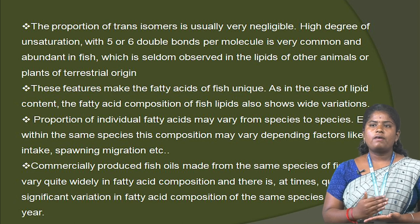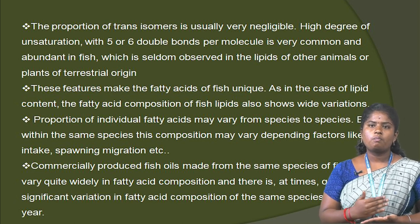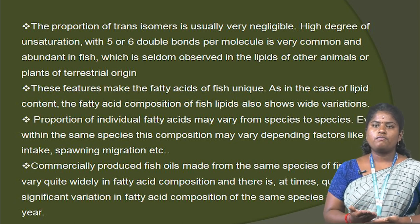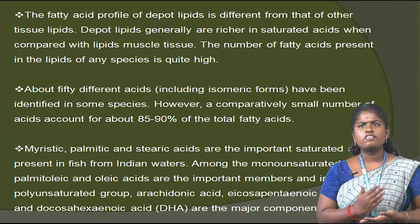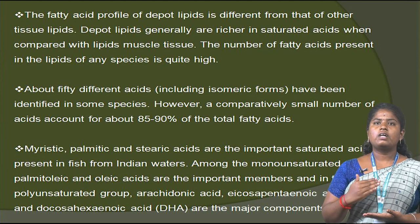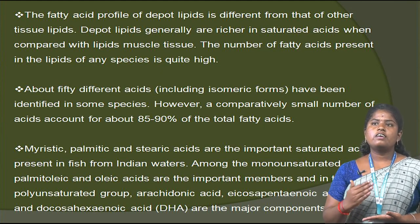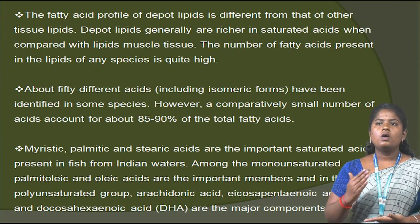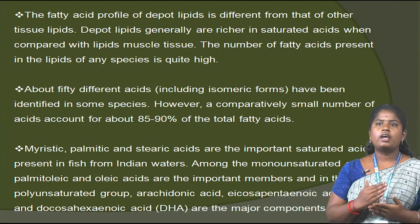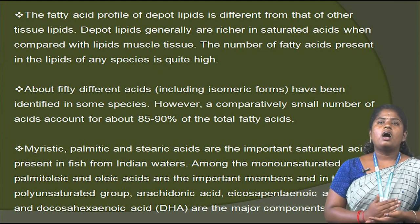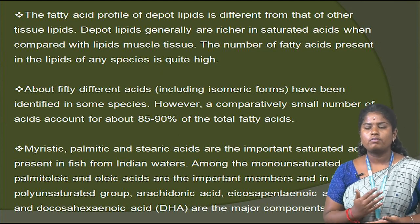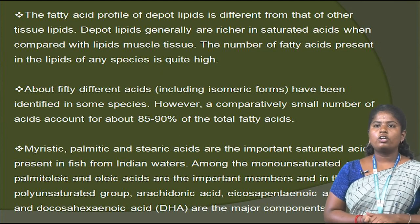Even within the same species, the composition may vary depending on factors like feed intake, spawning and migration. Commercially produced fish oil from the same species can vary quite widely in fatty acid composition, and there can be significant variation in fatty acid composition of the same species from year to year. Depot lipids are generally richer in saturated acids compared with muscle tissue lipids. Over 50 different acids, including isomeric forms, have been identified in some species. However, a comparatively small number of acids accounts for about 85 to 90% of the total fatty acids.